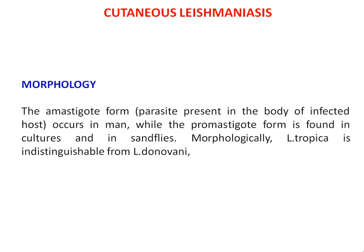As far as the morphology is concerned, it is the amastigote form — the parasite present in the body of the infected host — that is called the amastigote form, which occurs in man, while the promastigote form is found in cultures of the sandflies. Morphologically, Leishmania tropica is indistinguishable from Leishmania donovani. It is very much similar to Leishmania donovani with no distinctive features.